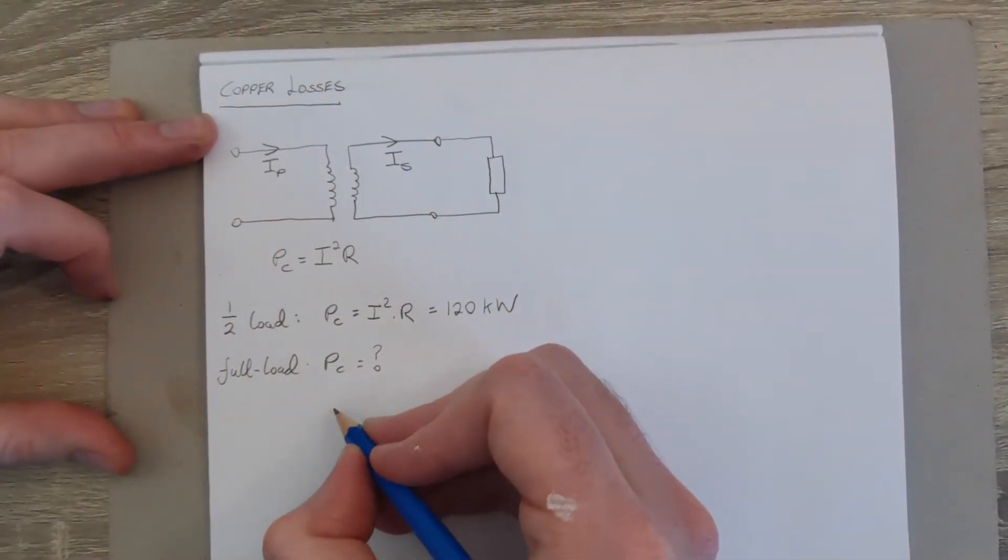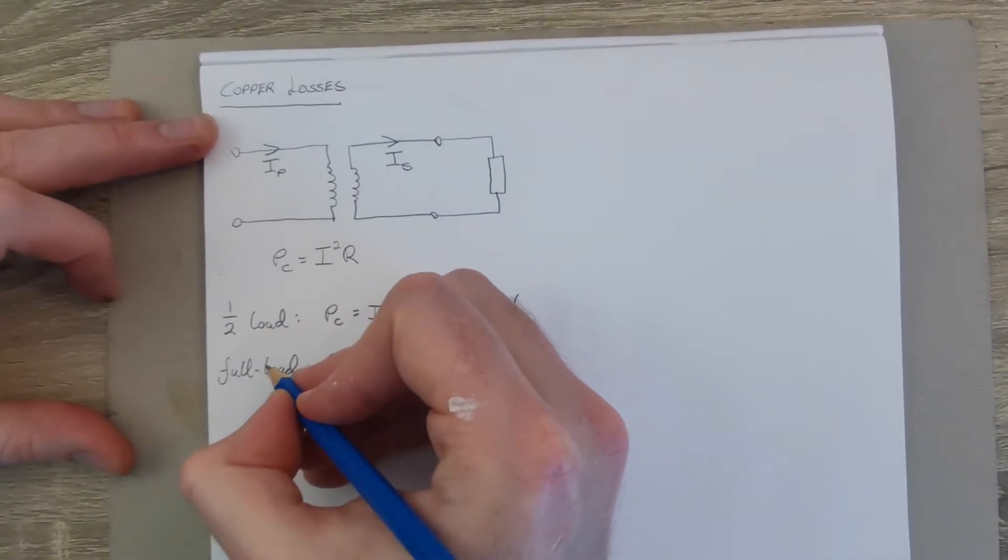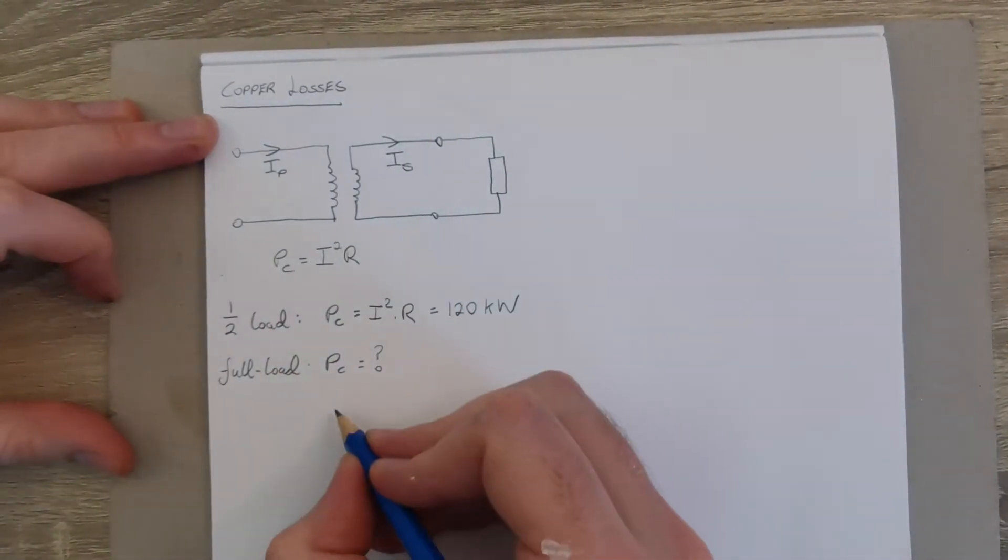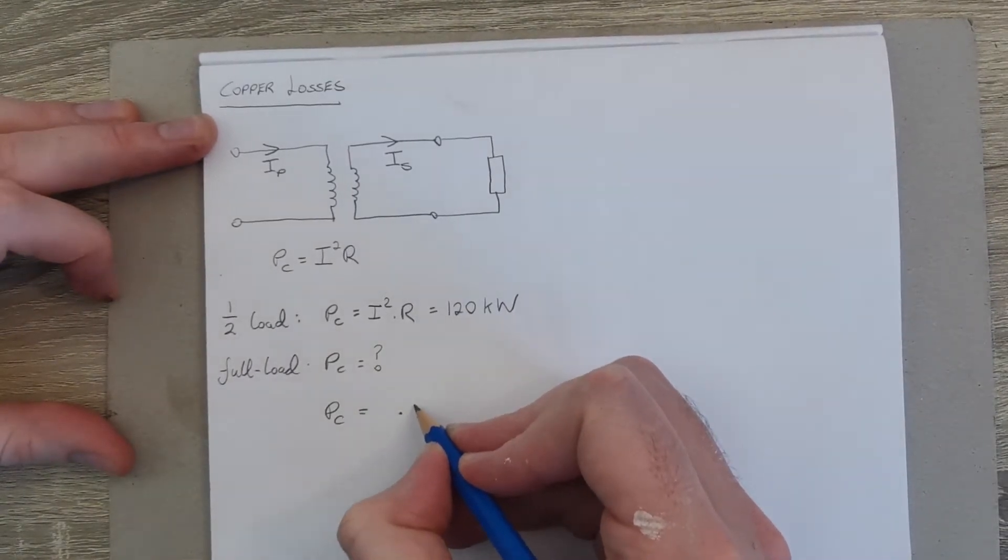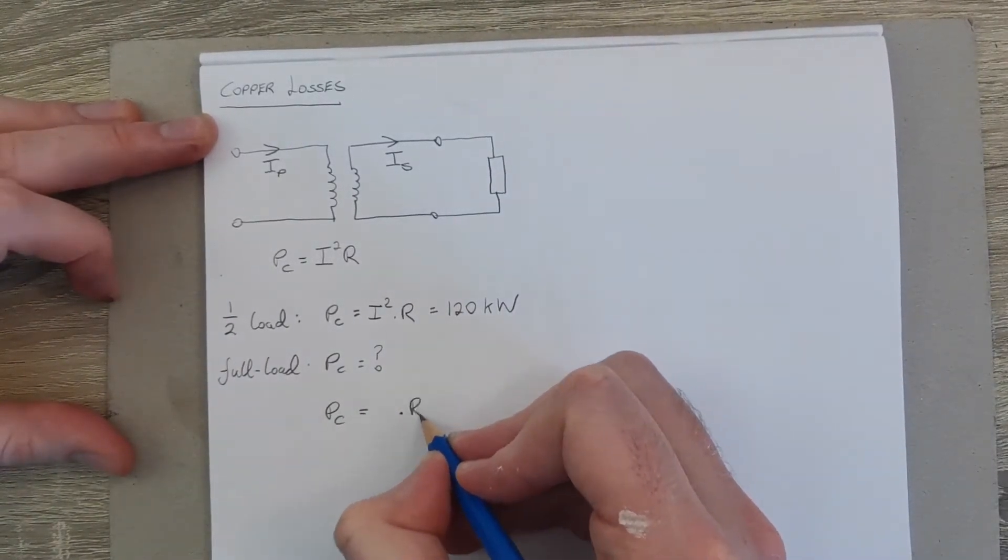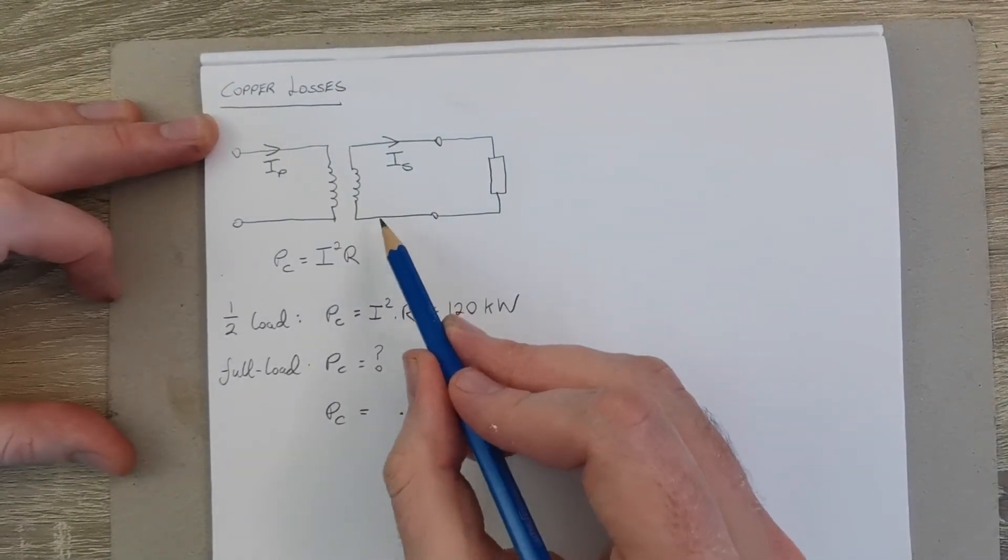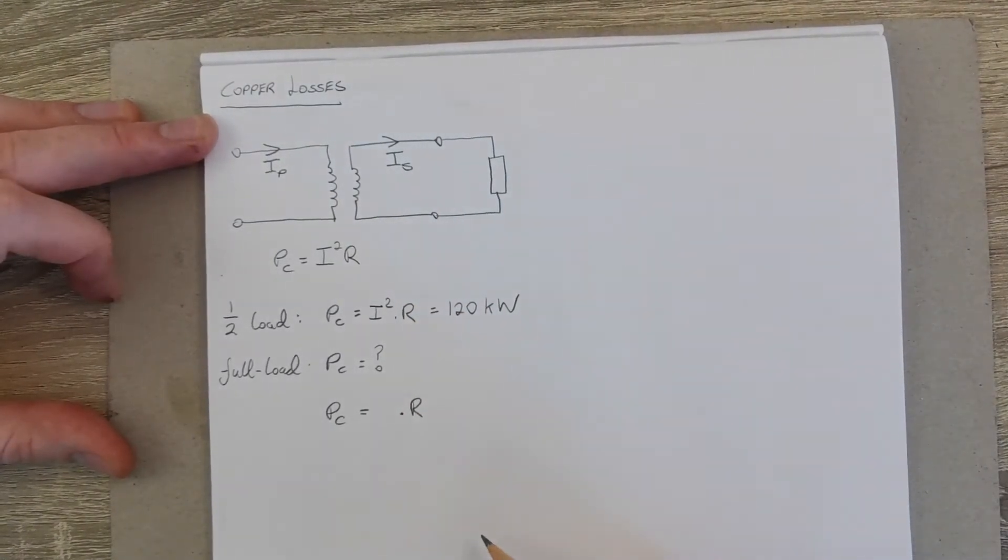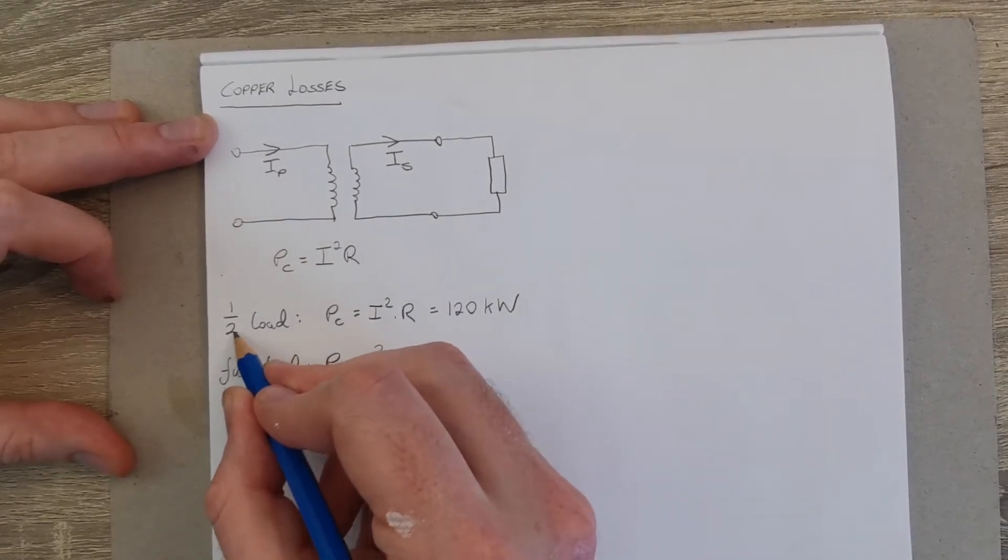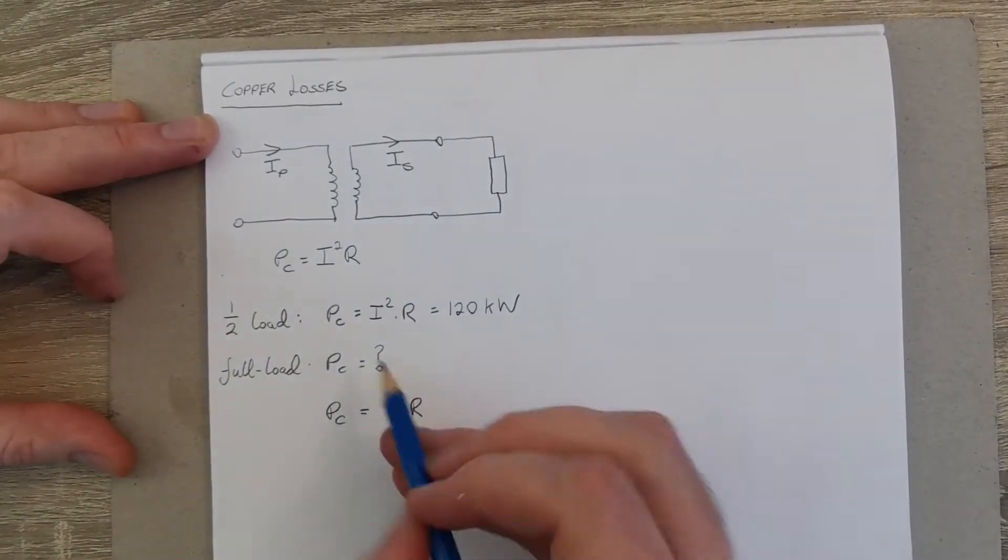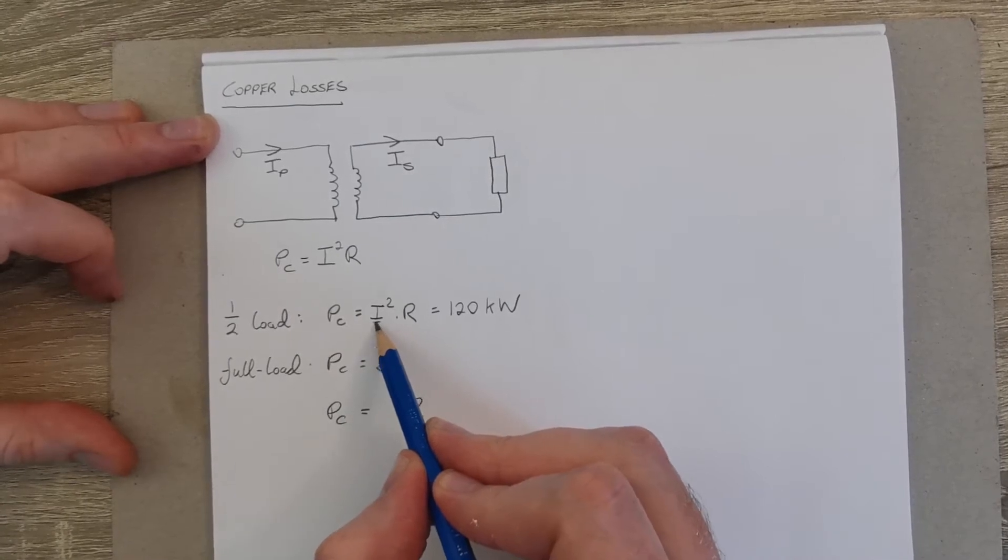So ask yourself what's changed between half load and full load. Well, the copper losses are going to still be dependent upon the resistance of the transformer's coils, so the transformer hasn't changed, it's the same resistance R. But we've gone from half load to full load, which means that whatever current was flowing at half load, now that we're at full load we have twice as much current, 2I, and we still have to square that.